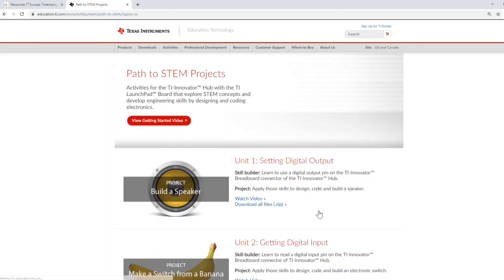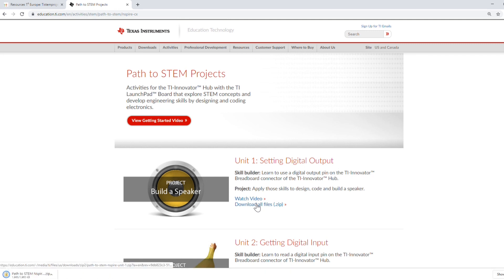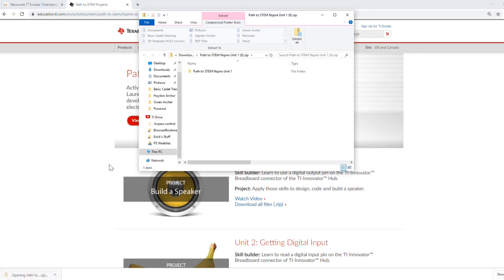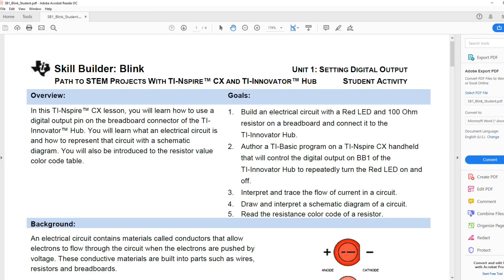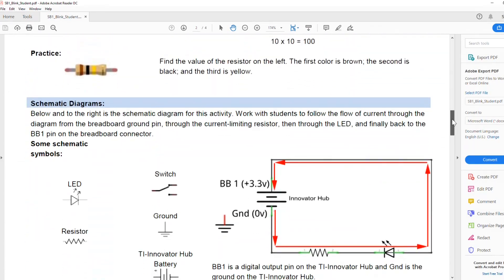Once there, download Unit 1 and find the Skill Builder folder to learn how to connect an LED to the breadboard and TI Innovator Hub. You'll also learn how to program the calculator and TI Innovator Hub to control this LED.